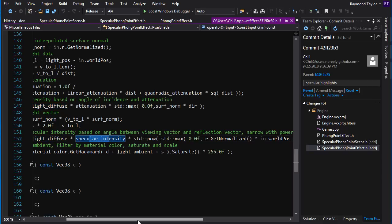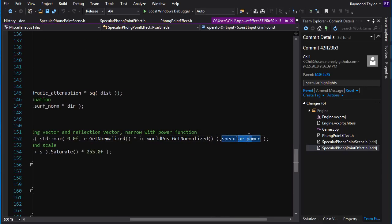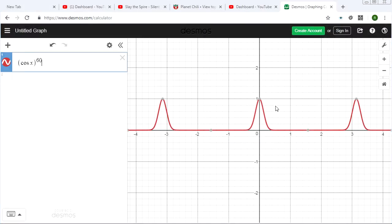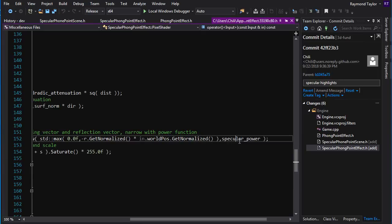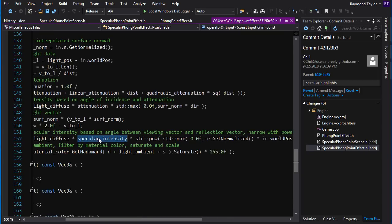Now the specular intensity and specular power are basically just magic constants that you can control yourself in order to change the properties of the light and more specifically of the material. So different powers will give you different effects. If you have a higher power you're going to have a sharper reflection, you're going to have a faster cutoff, whereas if you have a lower power your reflection is going to have a much more gradual roll-off and that means it's going to be more spread out and more fuzzy. So you want a high specular power for objects like chrome and you want a low specular power for objects like maybe a kind of matte plastic or something like that. And then you can control the intensity just to control the brightness of the specular highlight. We'll play around with these values in a little bit.